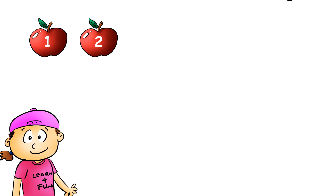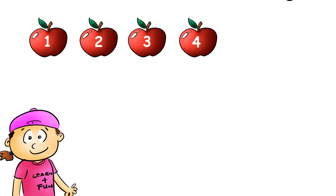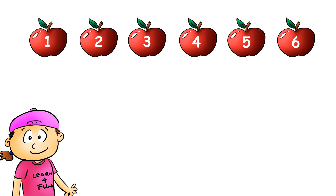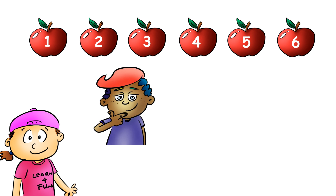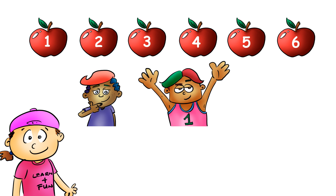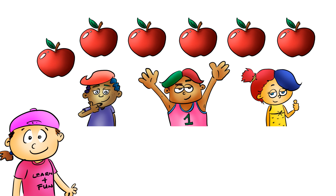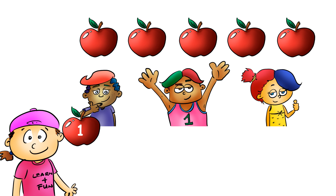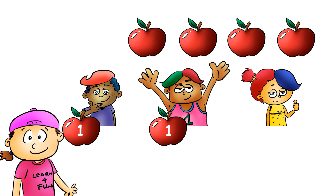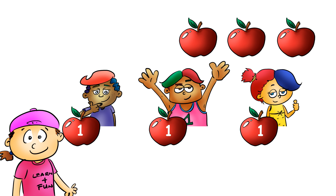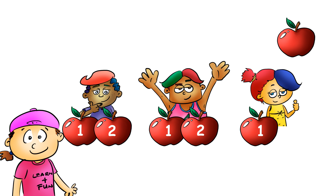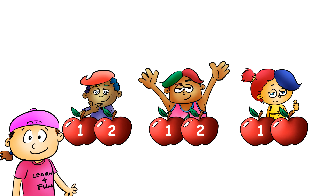Okay, so you have one, two, three, four, five, six apples. And then you have one, two, three friends. So one for you, one for you, one for you, one more for you, one more for you, and one more for you.